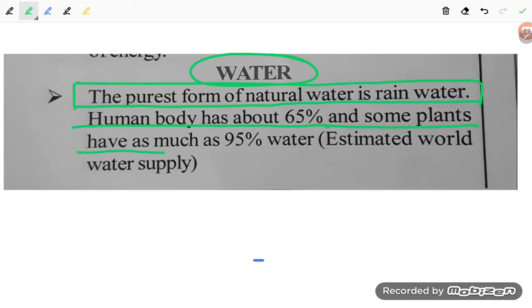So human body is 65 percent and other plants are 95 percent water, students.